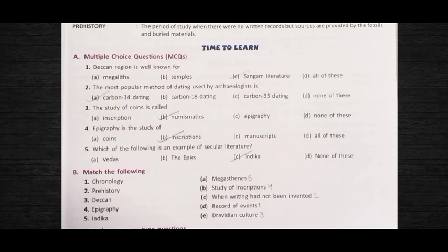Question number one, answer is C — Sangam Literature. We will also study Carbon Dating (C-14). Question number two answer, question number three answer is B, question number four answer is B, question number five answer is C. You have to do question numbers A and B in your book and send it to me. Thank you.